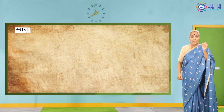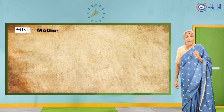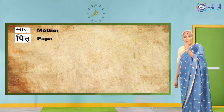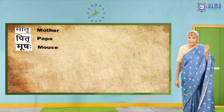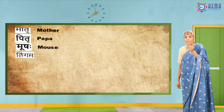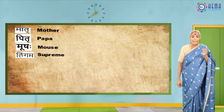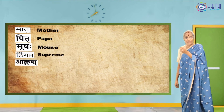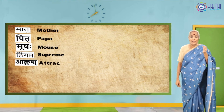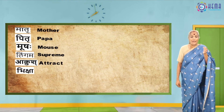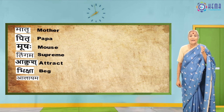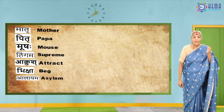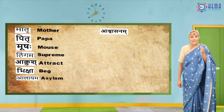Matra in Sanskrit means 'mother' in English. Pitra in Sanskrit gives us 'Papa' or 'Pope.' Musha means 'mouse.' Lingam gives us 'language.' Aakrush relates to 'attract.' Biksha gives us 'beg.' Alayam gives us 'asylum.' Aashwasana gives us 'assurance.'